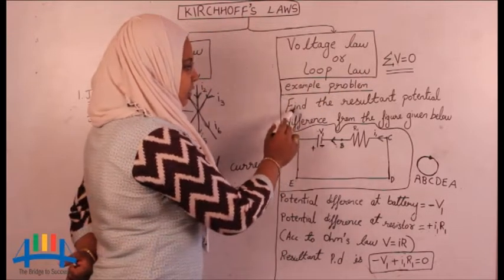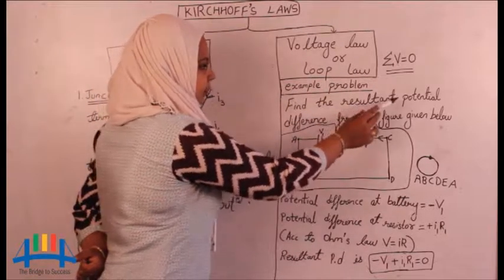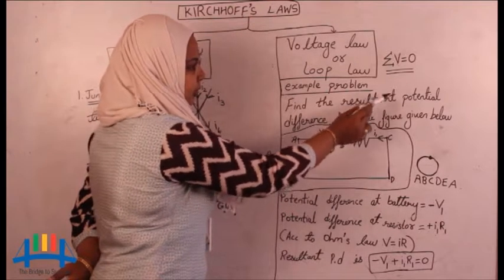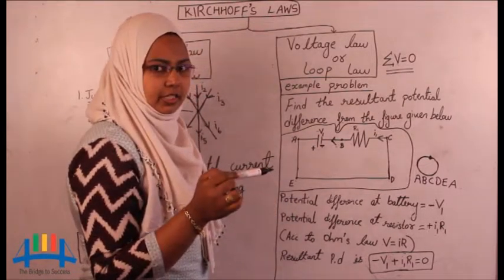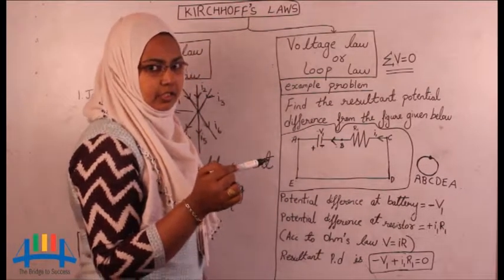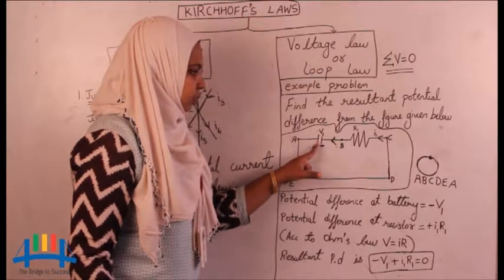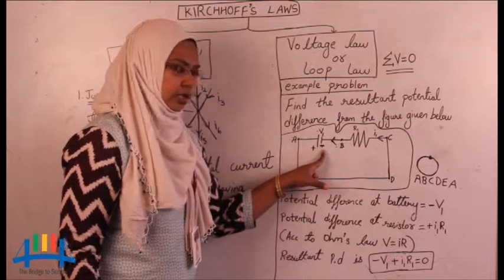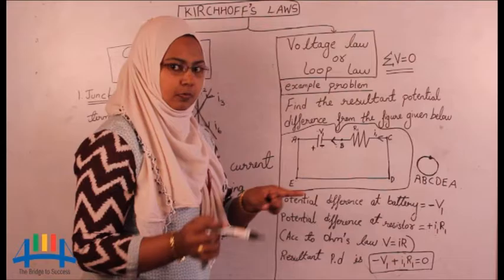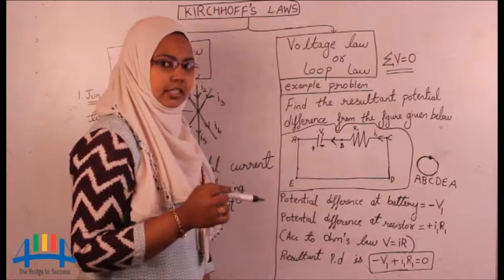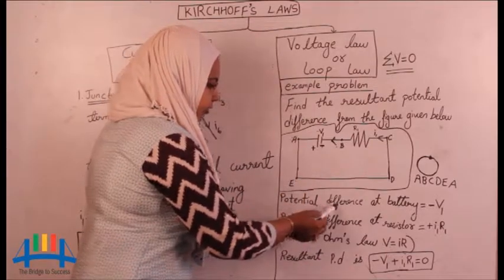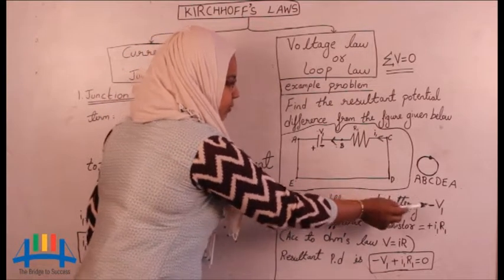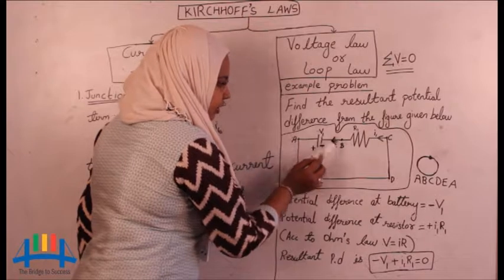Let us try to understand this by taking an example problem: find the resultant potential difference from the figure given below. Here they are asking us to find the total potential difference. To find the total potential difference, we first have to find the potential difference across each component. As you can see in this circuit, we have two components — a battery and a resistor. So first individually we will find out the potential differences, and then the sum of both will give the total potential difference. The potential difference at the battery is minus V1.